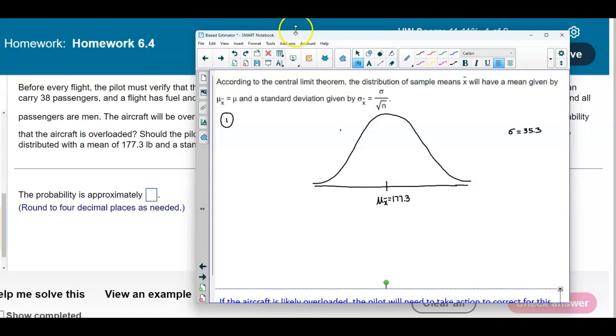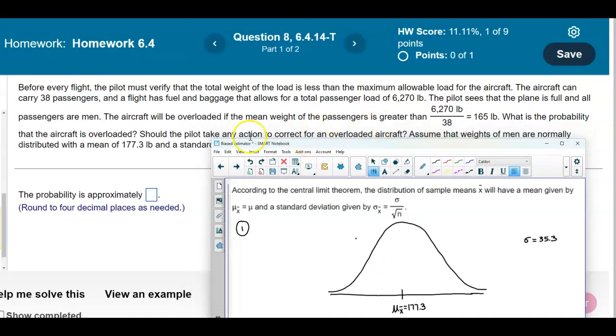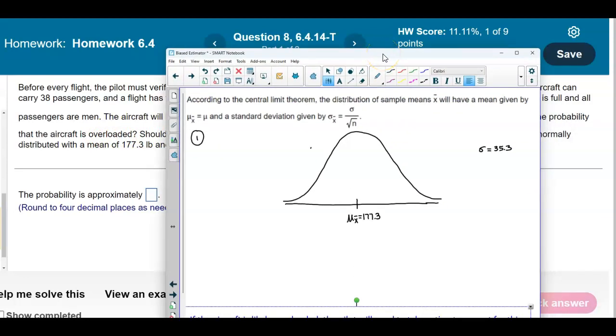We want to find the probability that the aircraft is overloaded, so we need to look at the value greater than 165. We're going to say that x is equal to 165, and then we want to find the area that's greater than that, so we're going to shade to the right.